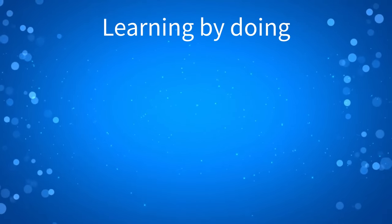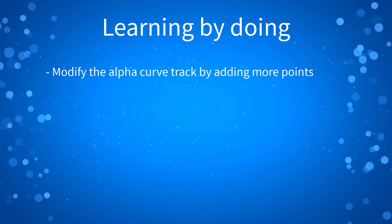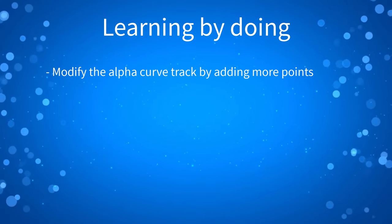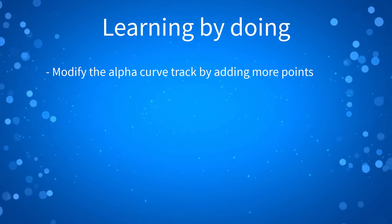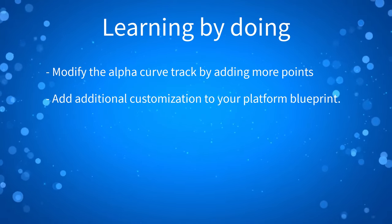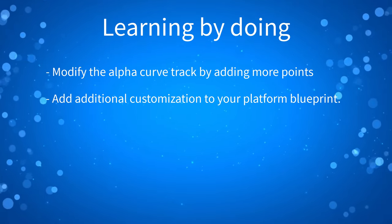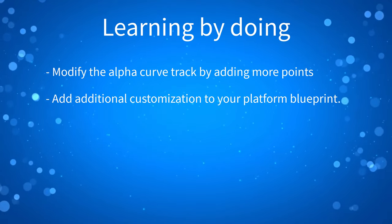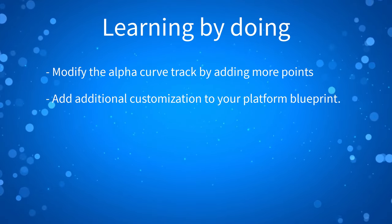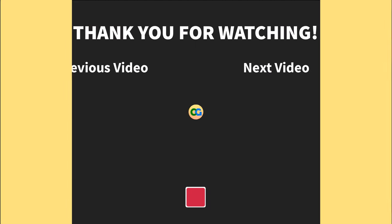If you want to practice what we learned, in the Timeline node modify the alpha curve track by adding additional points. Also add additional customization to your platform blueprint by adding more variables. That's all for this lesson — thank you so much for watching, and I'll see you in the next one.